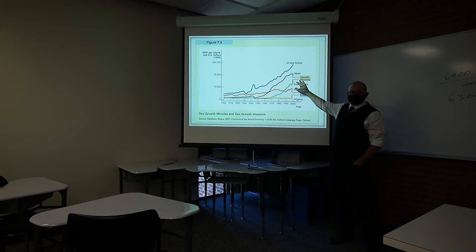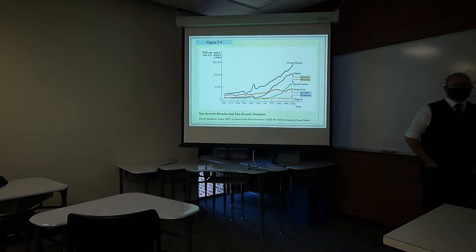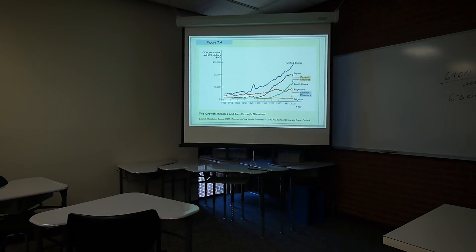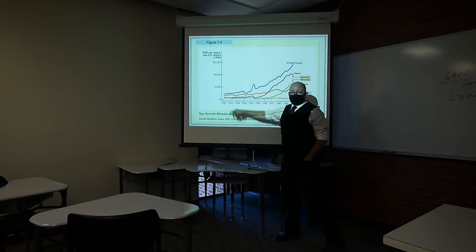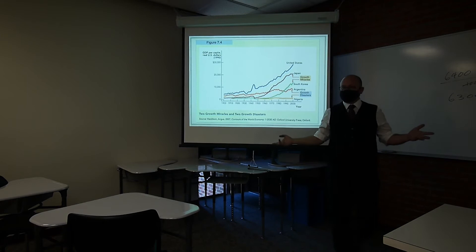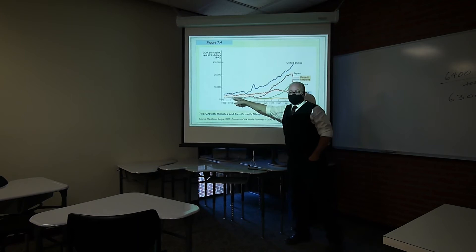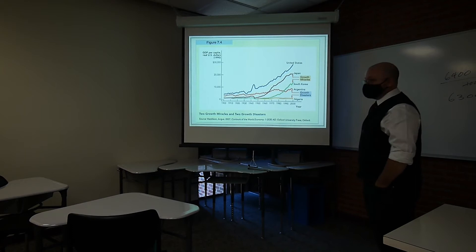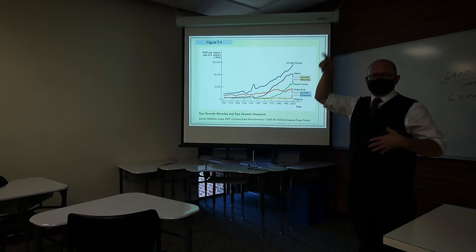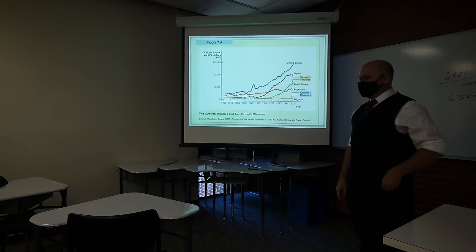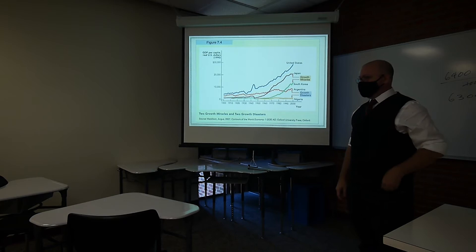If you went back to 1900 and picked countries you thought would be powerhouses 100 years later, Argentina was one of the right picks — it was doing really well. So the implicit comparison is Argentina compared to where it could have been. It would have been one of the countries you'd have picked to really take off. For homework: figure out what happened to China — there's that sudden drop. Why is South Korea a miracle? Why is Japan a miracle? They started lower than Argentina and shot up, exceeding expectations.